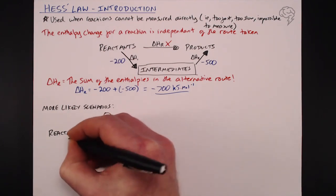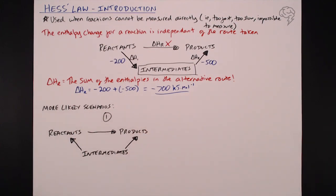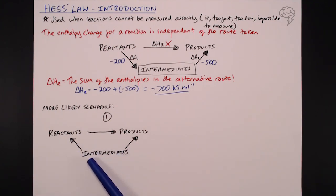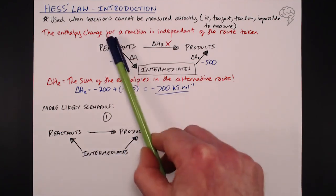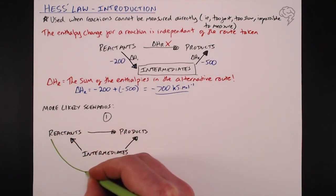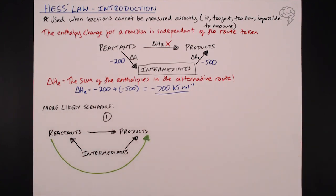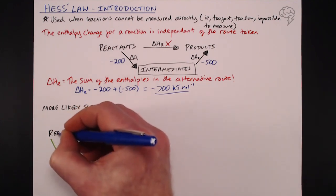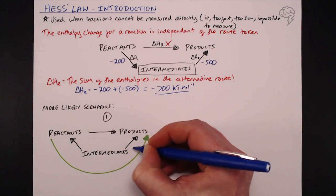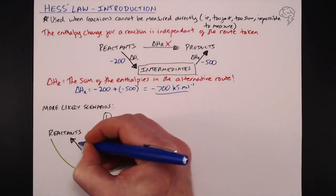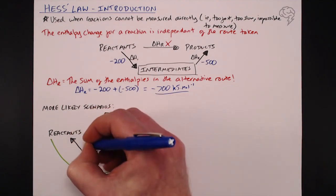In scenario one, we have our reactants and products, and we have an alternative route via intermediates — but we don't have the delta H going from reactants to intermediates. Instead, we have delta H values going from intermediates back to the reactants and to the products. Those of you who are observant will notice that one of these arrows is going the wrong way. Following our imaginary route from reactants through intermediates to products, one arrow is fine, but this other arrow here is going the wrong way.